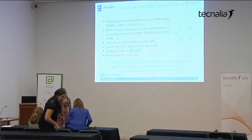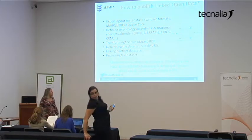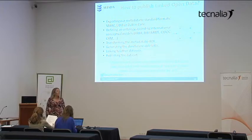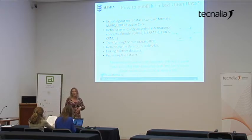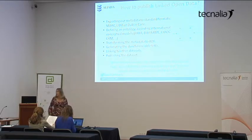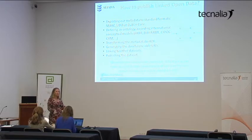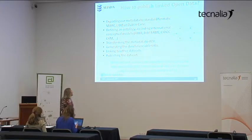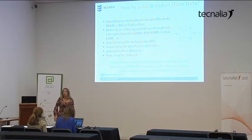But how do you publish on linked data? You have to follow some steps. First, you have to export your metadata from your collections to a standard format such as MARC, LIDO, or Dublin Core. You have to define an ontology according to international conceptual models such as FRBR, BFrame, or CIDOC CRM in the case of museums. You have to transform your metadata to RDF and create referenceable URIs — unique for each concept or element of your collection — so that a human querying them retrieves a web page they can understand, and a machine retrieves RDF. You have to link to other existing datasets on the cloud and publish your own datasets.